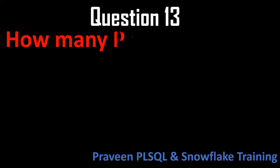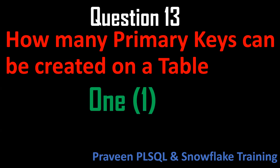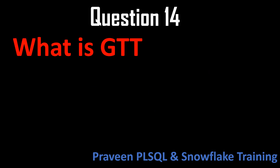Question number thirteen: how many primary keys can be created in a single table? A primary key is a combination of UNIQUE plus NOT NULL. The answer is only one primary key can be created in a single table. If you want multiple columns, you should use a composite primary key.